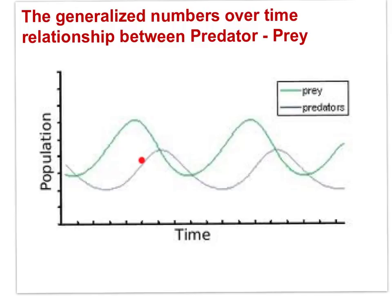Then the increasing numbers of predators cause the prey numbers to fall. Once the prey numbers decline, predator numbers decline. And then as predator numbers decline, prey numbers will increase, and predator numbers follow — always with a time lag.